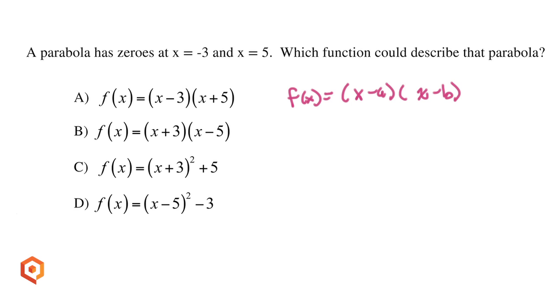In this problem, we were told that the zeros of a parabola are negative 3 and 5. x equals negative 3 gives us the linear factor x minus negative 3, or x plus 3.